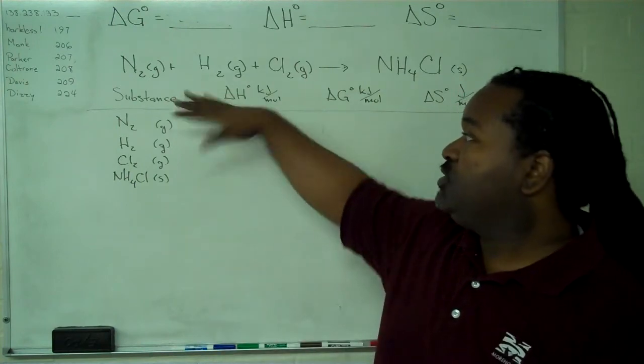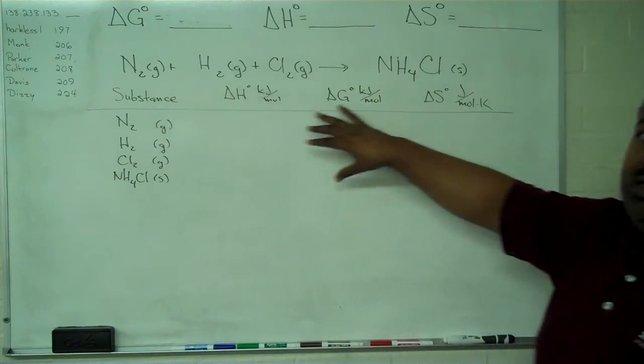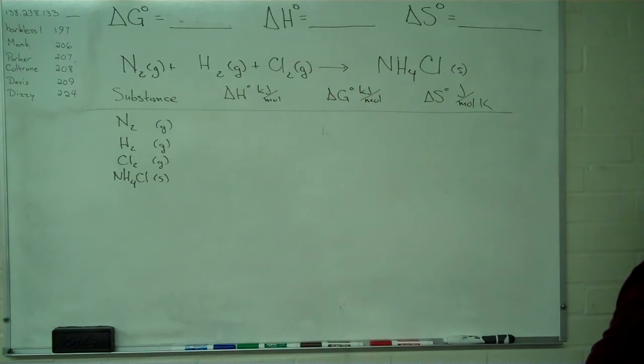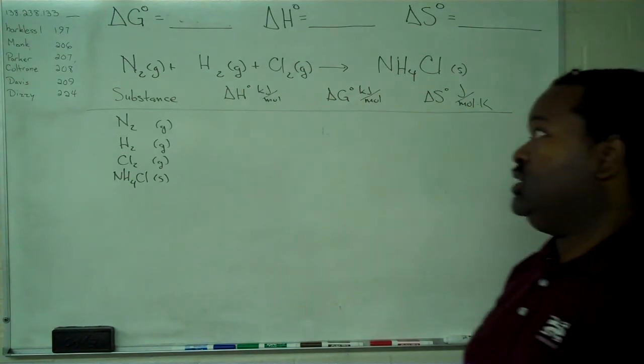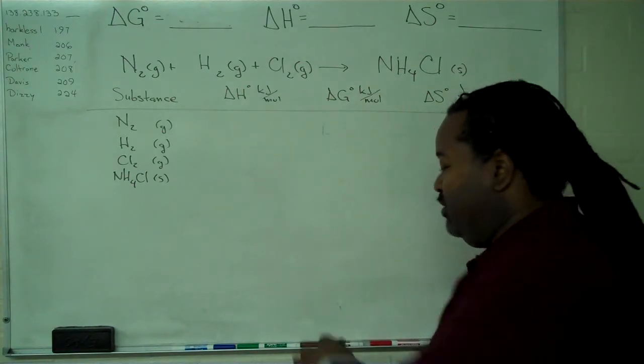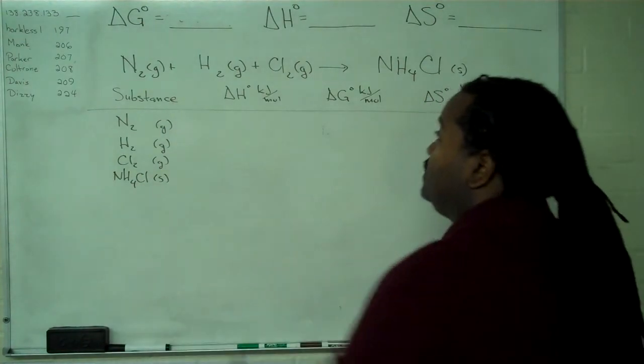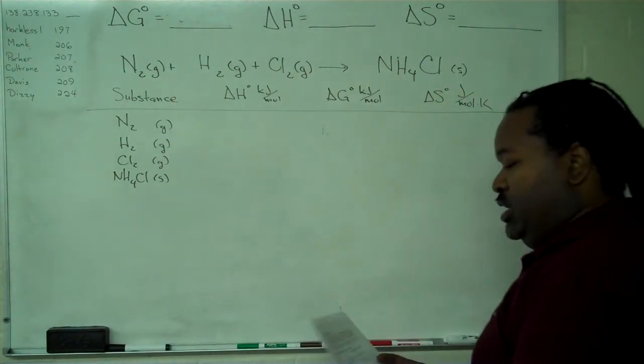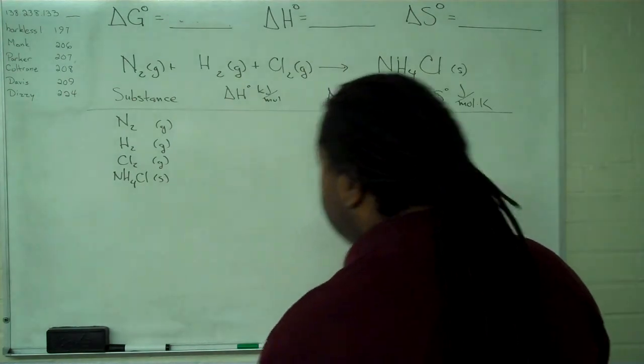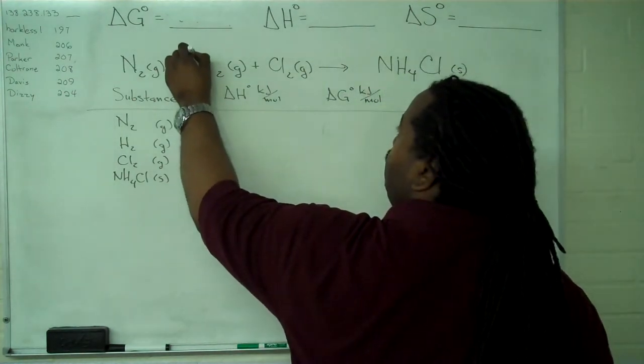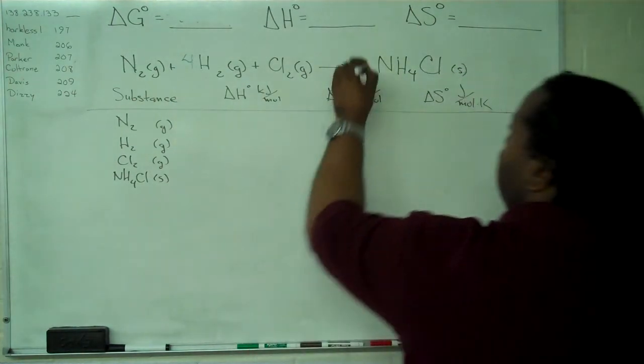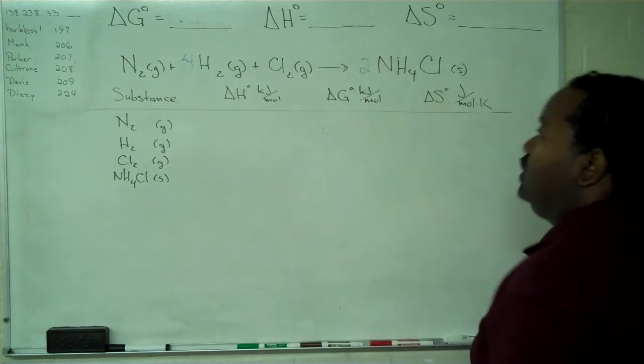Given a reaction and data table to fill in, the first step is to determine whether or not you have a balanced reaction. In this case, we do not. To balance this, we will need four hydrogens and two ammonium chloride.